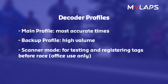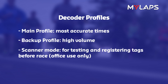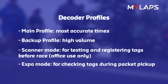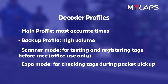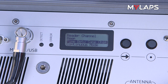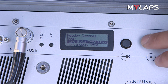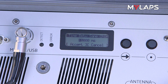The Scanner mode is for testing and registering tags before the event — individual tags only, at a short distance from the antenna. Expo mode is used for checking tags during packet pickup. Never set the profile to Scanner or Expo during the race. Time Between Same Chip refers to the minimum time before reading a tag again after it re-enters the field; this time is measured in milliseconds. The default is set to ten thousand milliseconds, which is ten seconds.